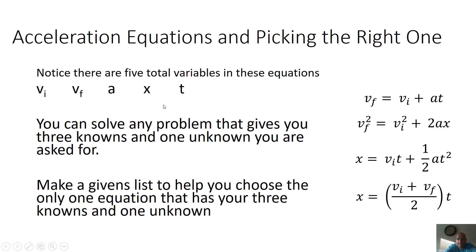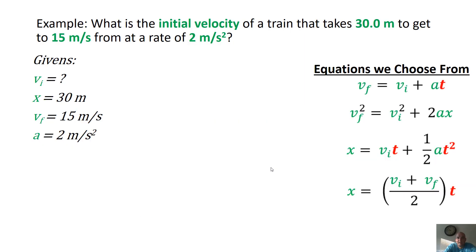Once you read the problem and realize it's an acceleration problem, it will be VF, not V. Making a givens list — especially including your unknown — will help you pick the right equation. If you leave out your unknown, you won't be able to select the right equation. You'll probably need a little practice before that fully clicks.